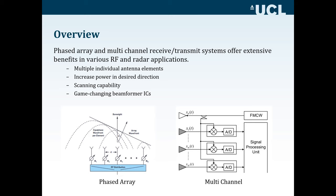Phased array systems have been around for a while and they go through phases of being attractive depending on hardware limitations and breakthroughs — these systems are now a hot topic. A phased array is essentially many smaller radiating elements working together to achieve the same performance of a larger system. You can have many arrangements for these individual elements, either circular or linear. In a linear arrangement, varying the phase difference between elements allows you to control the combined radiated power in any direction across the aperture.